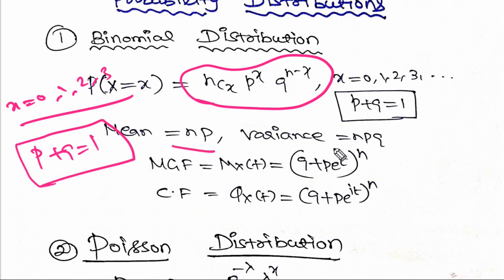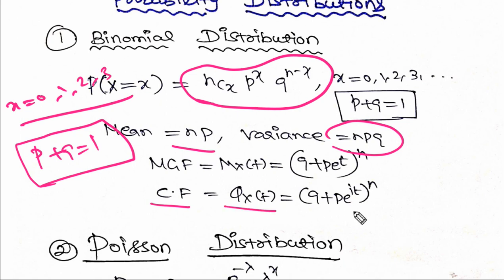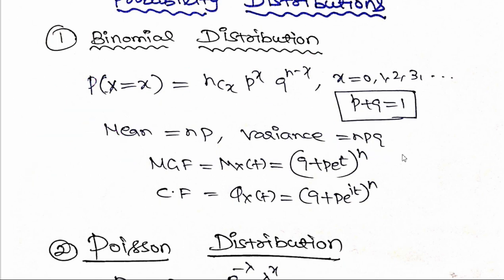The mean is np, the variance is npq. The moment generating function (MGF) is (q + p·e^t)^n. The characteristic function phi(t) is (q + p·e^(it))^n. This is the probability of the binomial distribution.